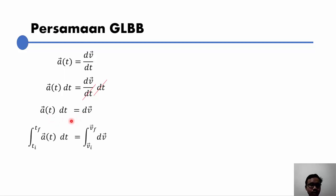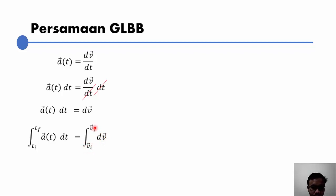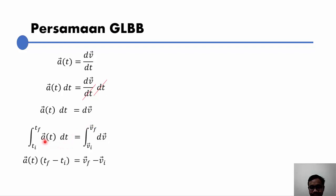Kalau misalkan kedua ruas ini kita integralkan, karena ruas kiri A-nya diintegralkan terhadap fungsi waktu, maka batas integralnya juga sebagai fungsi waktu. Dan ruas kanan, integralnya bekerja sebagai fungsi kecepatan, maka batas integralnya juga sebagai fungsi kecepatan. Dari persamaan ini, kita peroleh bahwa integral dari A·dT itu adalah A dikali T, di mana T-nya kita gantikan sebagai batas atas dikurang batas bawah.